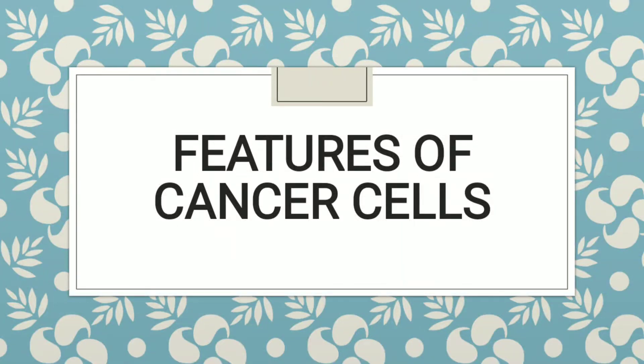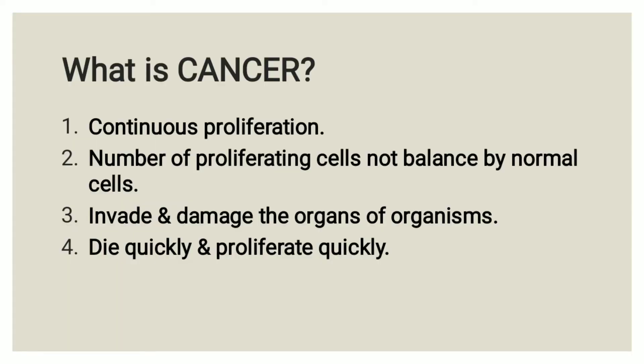Today we will discuss topics of features of cancer cells. Cancer is a disorder characterized by continuous proliferation of cells. This event happens when the increase in the number of excessively proliferating cells is not balanced by normal cell loss. These cells continuously invade and damage the organs of the organism.